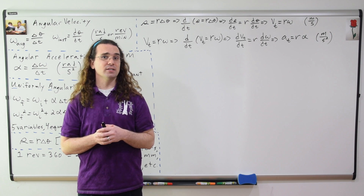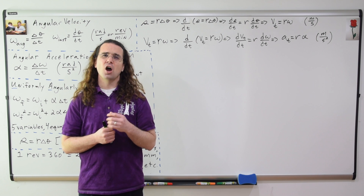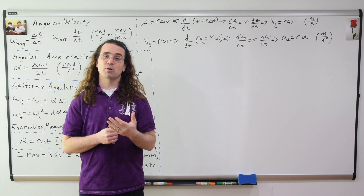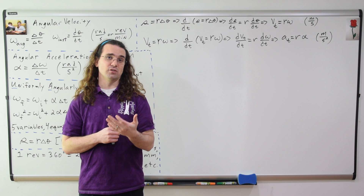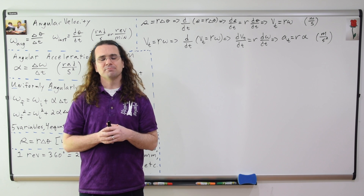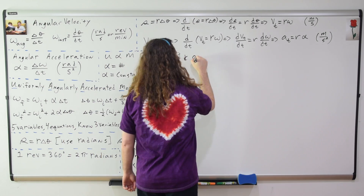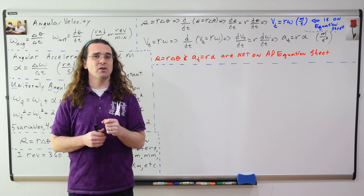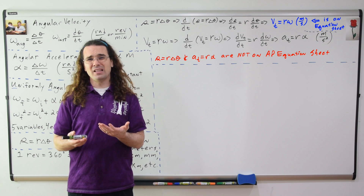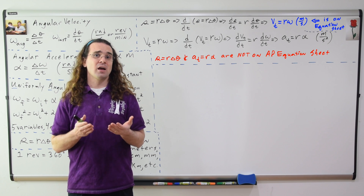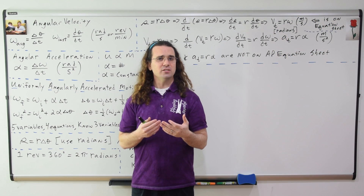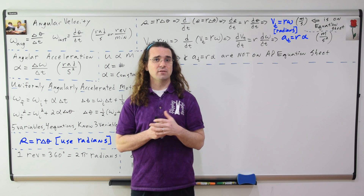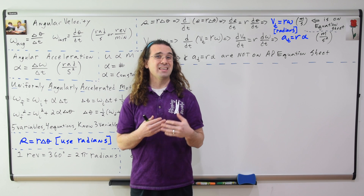Both tangential velocity and tangential acceleration are tangent to the circle the object is describing, which means they are also perpendicular to the radius of the circle. The equation for tangential velocity is the only one of these three equations which appears on the AP equation sheet. However, it's relatively easy to remember the other two if you can remember how they are derived. When using the equations for tangential velocity and tangential acceleration, you must use radians for the angular quantities.